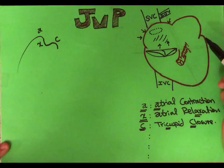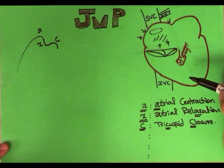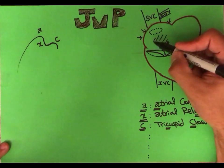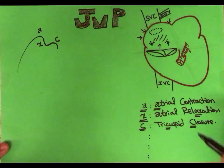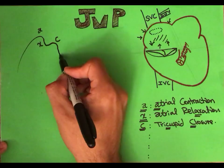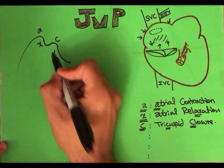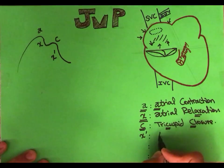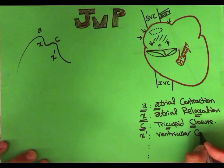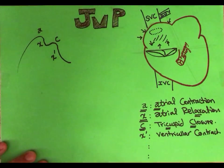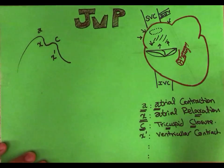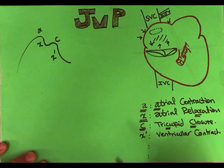After the tricuspid valve closes, the right ventricle contracts, pushing blood through the pulmonary artery into the pulmonary circulation. During this phase there is no further pressure build-up in the right atrium; instead, pressure decreases because the right atrium is not involved in this process. This produces the down-sloping X prime wave. X prime stands for ventricular contraction.